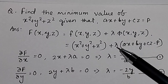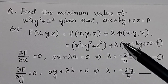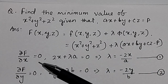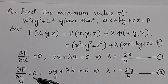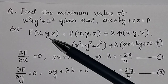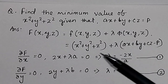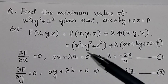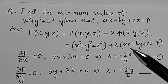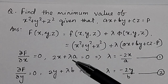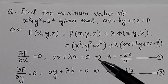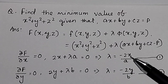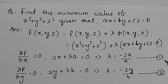To solve this using the Lagrange multiplier method, first we take the partial derivative of the function with respect to x and set it equal to 0. The partial derivative with respect to x gives 2x + λa = 0, so λ = -2x/a. This is equation number 1.